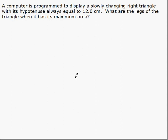This example is about maximizing the area of a given geometric shape. A computer is programmed to display a slowly changing right triangle with its hypotenuse always equal to 12.0 centimeters. What are the legs of the triangle when it has its maximum area?